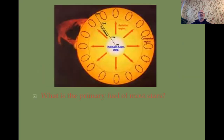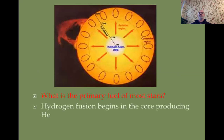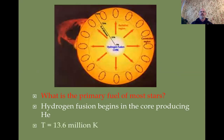What is the primary fuel of most stars? We've said that hydrogen fusion begins in the core and produces helium. A main sequence star is mostly hydrogen being fused into helium, and that happens at a temperature of about 13 million Kelvin in our Sun.